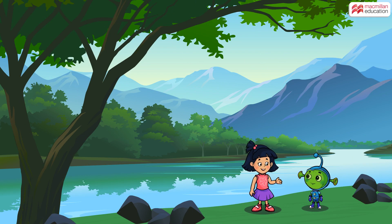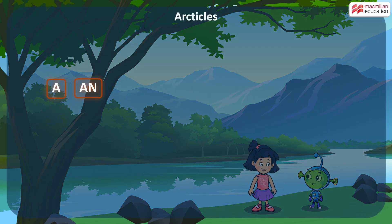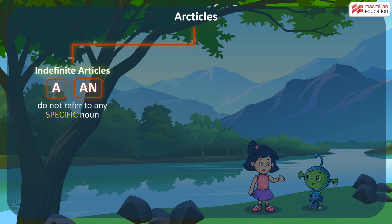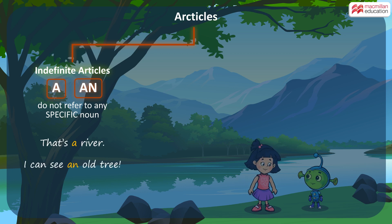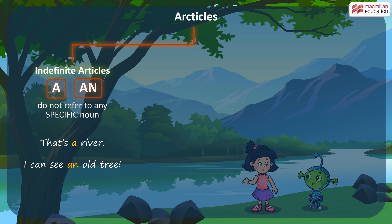And I thought I knew all about A and AN. Then let me tell you something more. A and AN are called indefinite articles, because we use these when we do not wish to refer to any specific naming words. For example, that's a river and I can see an old tree. I am not talking about any particular river or tree, so I say a river and an old tree.